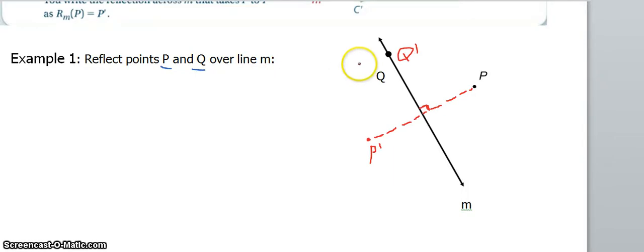So what we end up seeing here is because Q is on the line, when we reflect it on that line, it stays exactly where it is. So Q prime is at that same location. And then P, we come to our line M at 90 degrees. We go the exact same distance the opposite direction and we get to our P prime point.